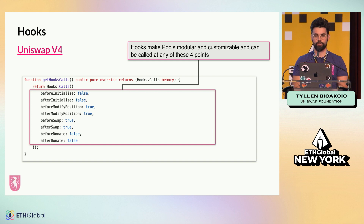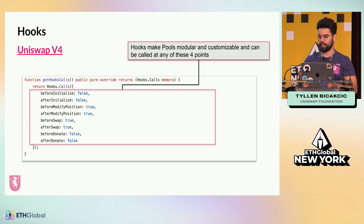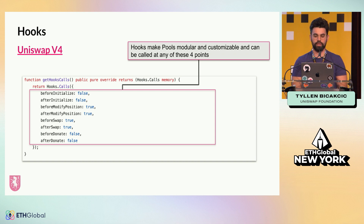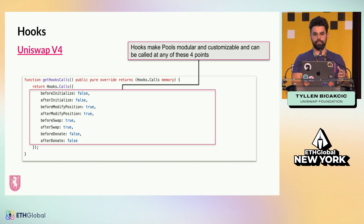You can call hooks before or after you create a pool — as we saw when initializing the pool, there's a check: do we call this hook here? Before or after a position is modified for an LP, so you're able to do cool things with that. You're able to call a hook before or after a swap occurs, and before or after donate. Donate is also a new feature in v4 where you can give fees to LPs in a pool — basically donating to them, incentivizing them. If they're staying within a certain range of liquidity, you can give them fees to maintain in that range. There are lots of cool liquidity mining incentives that could be created from this.